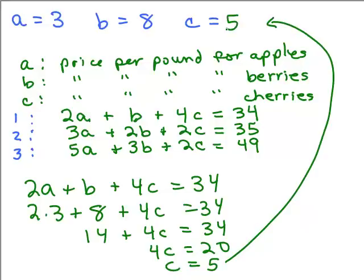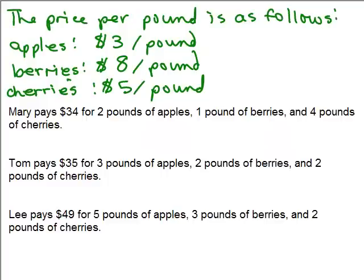Now we've got to make sure these answers make sense in the original problem. The cost of apples is $3 a pound, the cost of berries is $8 a pound, and the cost of cherries is $5 a pound. So the price per pound is: apples $3, berries $8, cherries $5. Let's verify this against the three original statements.